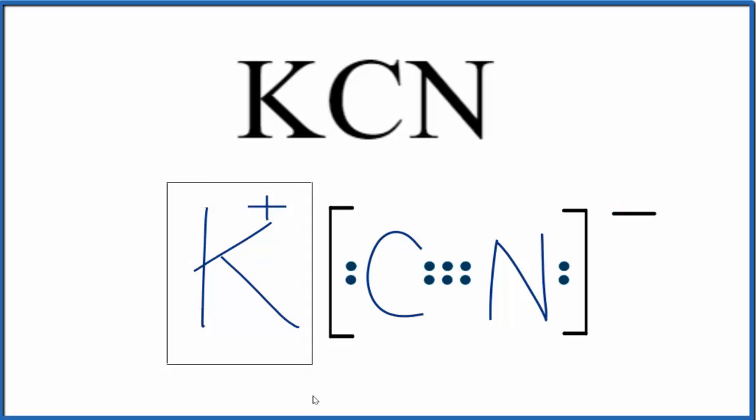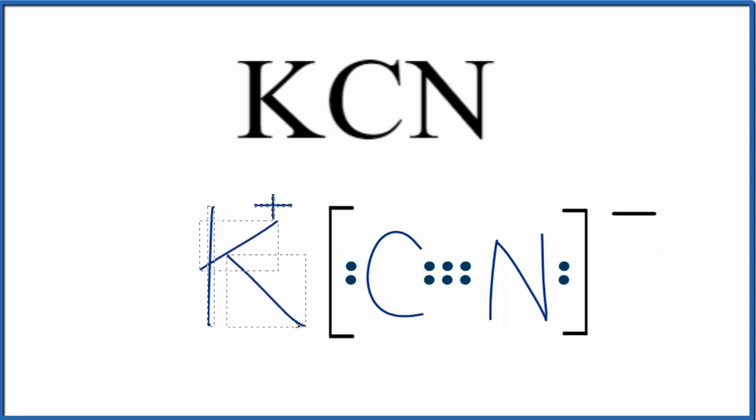And now we have this positive ion and a negative ion, they're opposite charges, they're attracted, that's what forms the ionic bond in KCN.